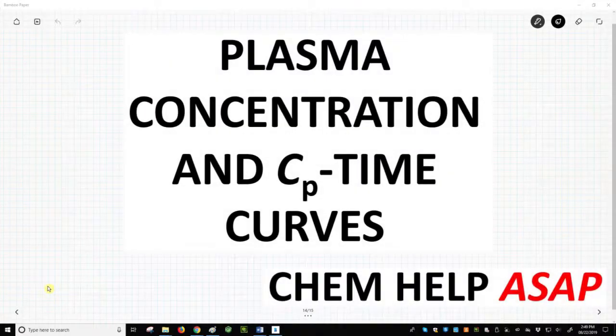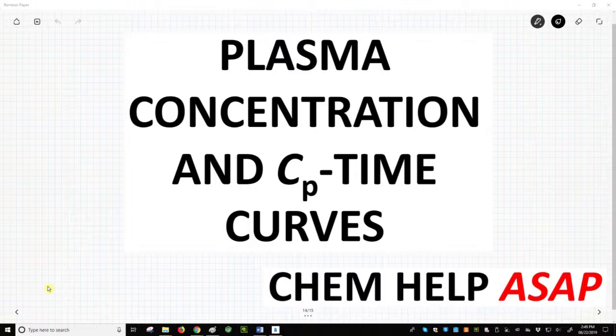Good day from Chem Help ASAP. Determining the concentration of a molecule in a living organism is very difficult. One issue is that a drug is not uniformly distributed in a patient. The amount of drug in a patient's bones is likely different from the amount in one's muscles. Unfortunately, there is no good way to sample all parts of the body.